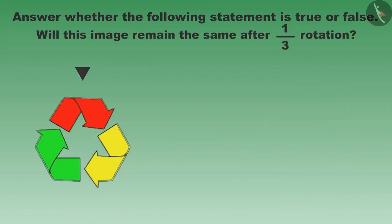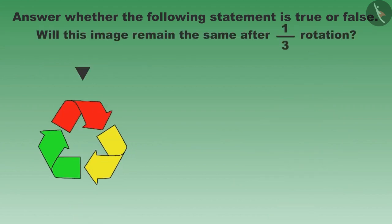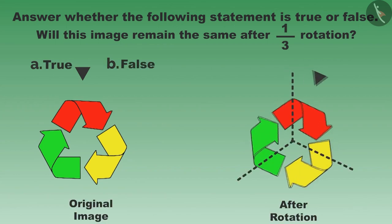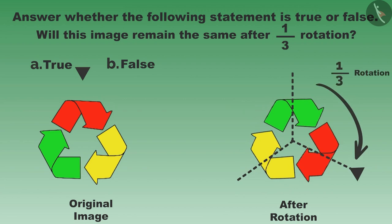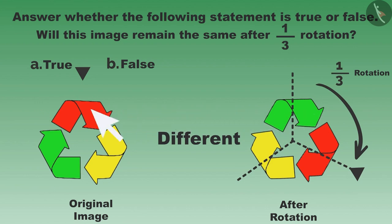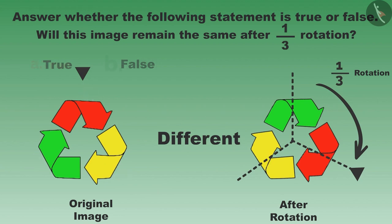Will this image remain the same after one-third rotation? Let us rotate it by one-third and see for ourselves. This image does not match the earlier one. Since this image is colorful, we have to focus on the order of the colors also. All these parts have different colors, thus this is a false statement.